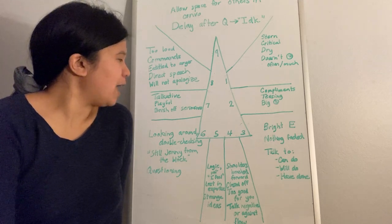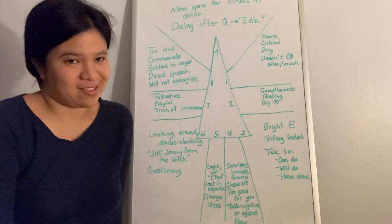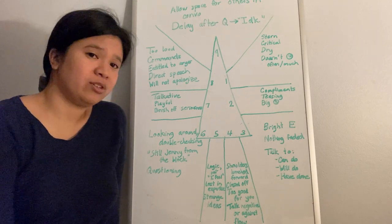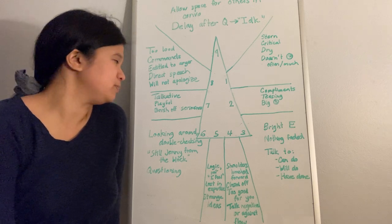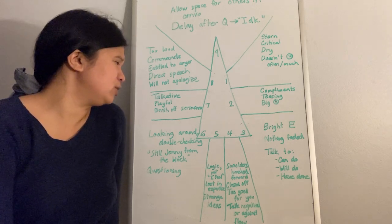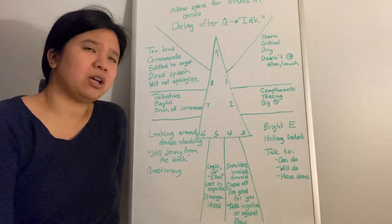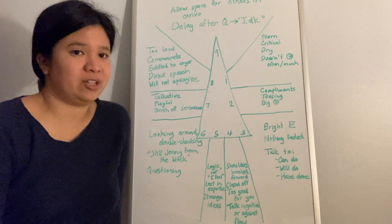The last type in our head triad is our fun 7s. 7s are talkative. They use a lot of words typically in conversation. They're verbose. 7s are playful. They're high energy. And they will brush off seriousness in the favor of fun.